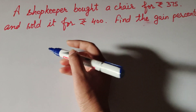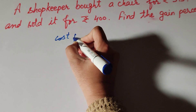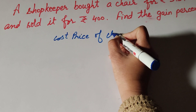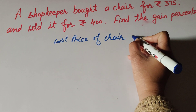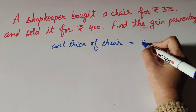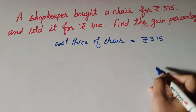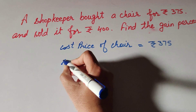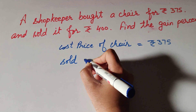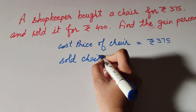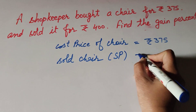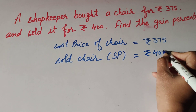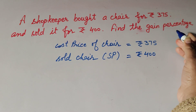The given information is cost price — the shopkeeper bought the chair for rupees 375, so cost price of chair equals rupees 375. The chair was sold for rupees 400, so selling price equals rupees 400.